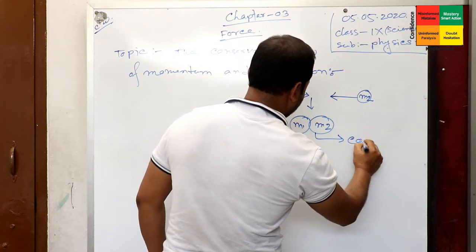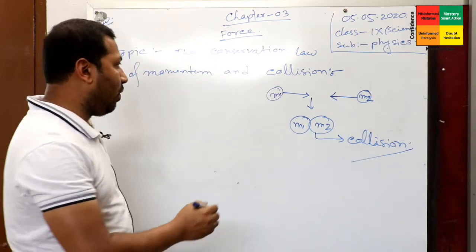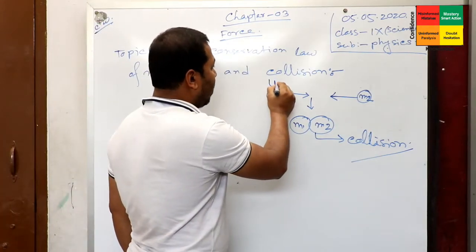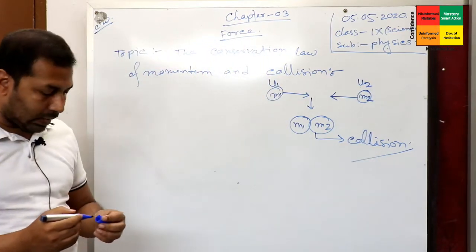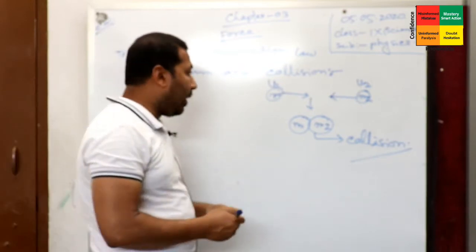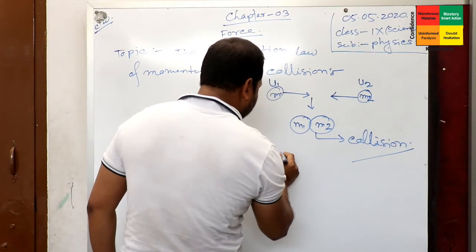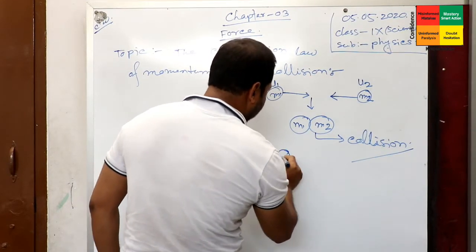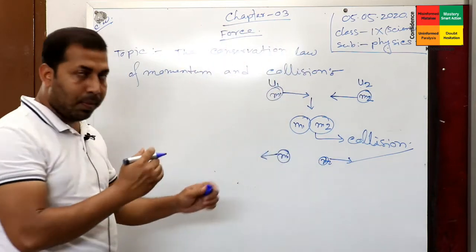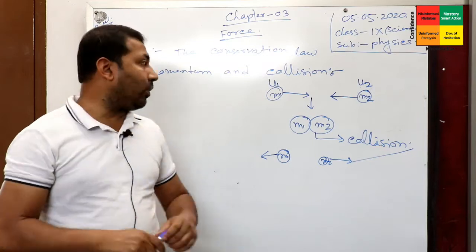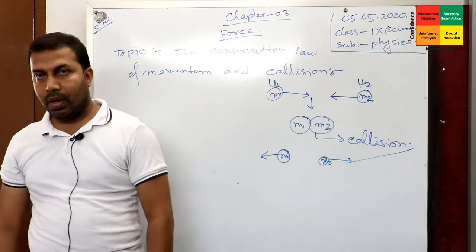Have a look at this second figure. This is m1, this is m2 — this is the collision condition. The velocity of m1 is u1, the velocity of m2 is u2. They will hit each other, and after that they may move in this direction. This is the fact of collision.